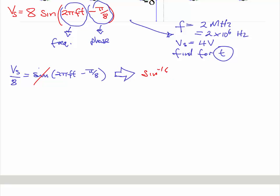We want to isolate this t here—that's what we're interested in. It might be a good idea to move the -π/8 over to the left, and then it becomes +π/8. So then we're going to have sin^(-1)(Vs/8) + π/8 = 2πft.